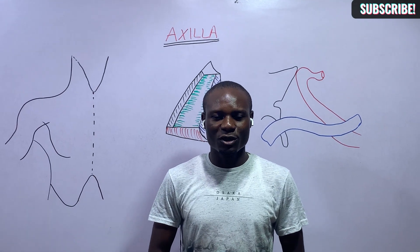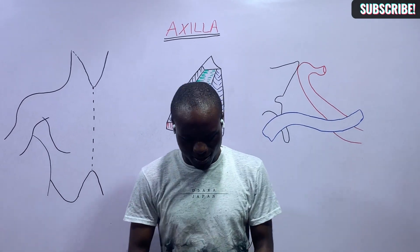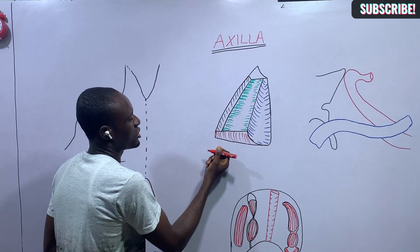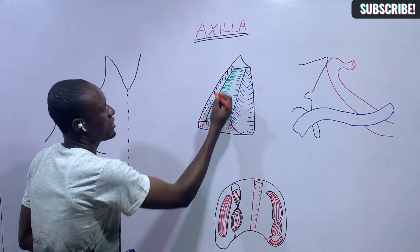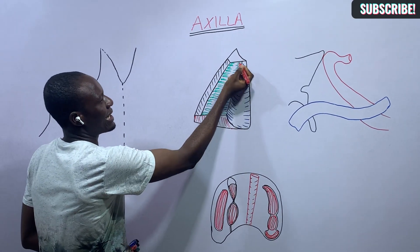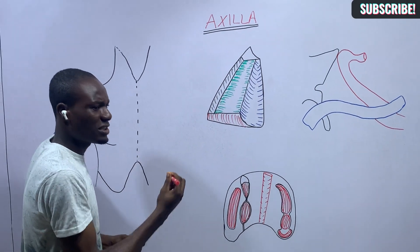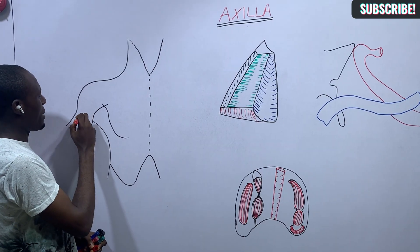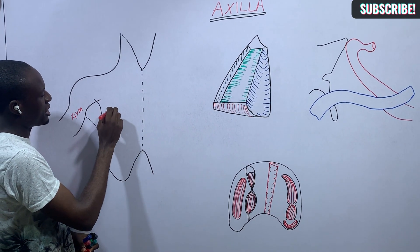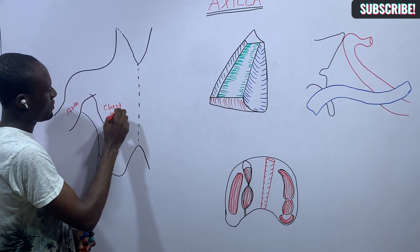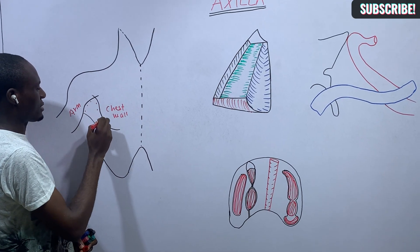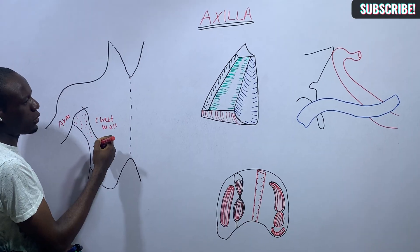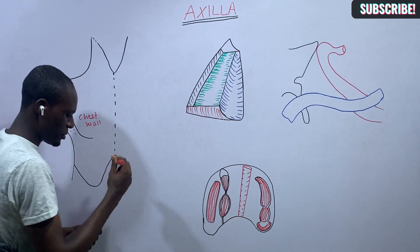Hi M.S. Scholars, today's video is all about the axilla. The axilla is a truncated pyramidal space — it looks like a pyramid but its apex is truncated. It is located between the upper part of the arm and the chest wall, and it is pyramidal in shape.